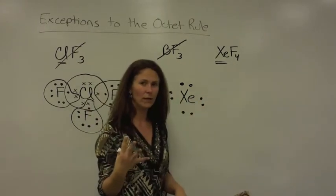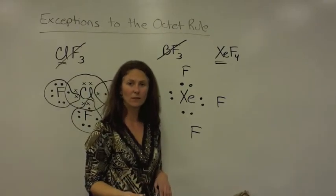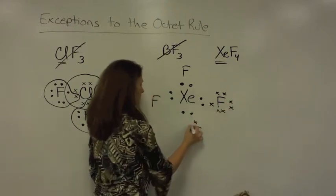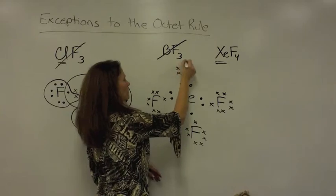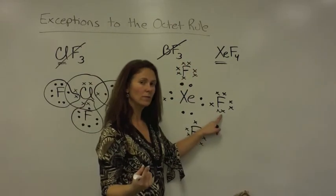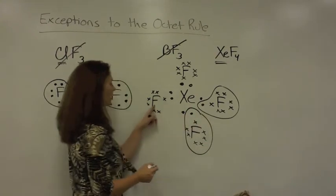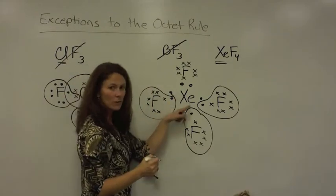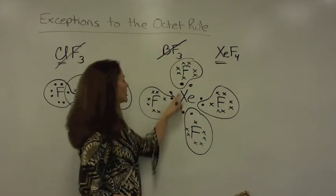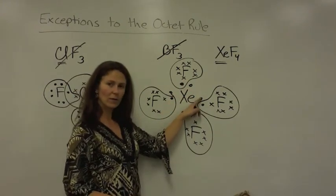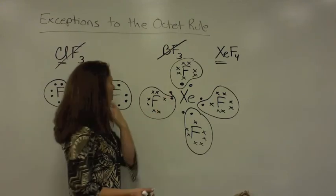Now we need to bond in four fluorine atoms. Each fluorine has seven valence electrons. This fluorine only needs to borrow one, but in turn will donate one back. This fluorine will borrow one and in turn will donate one back. This fluorine will borrow one and in turn will donate one back. And this fluorine only wants to borrow one and in turn will donate one back. Xenon ends up having one, two, three, four, five, six, seven, eight, nine, ten, eleven, twelve. A set of twelve electrons within the xenon atom.